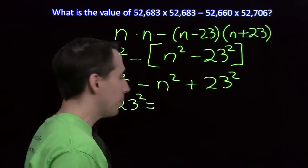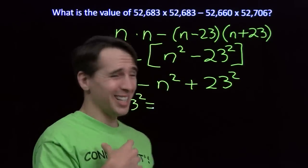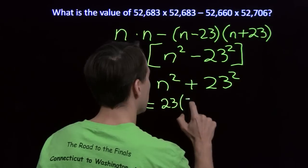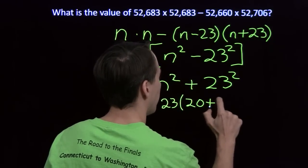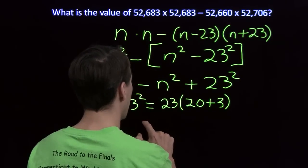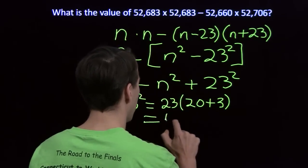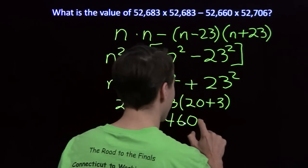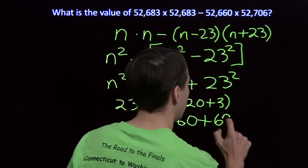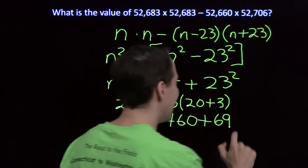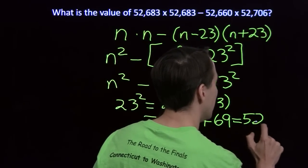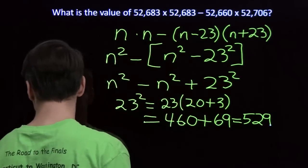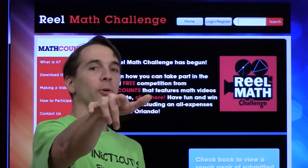Now I can use the distributive property to compute 23 squared. That's 23 times (20 plus 3): 23 times 20 is 460, and 23 times 3 is 69. 460 plus 69 is 529. And if you think you can do better than this, you know where to go — realmath.org.